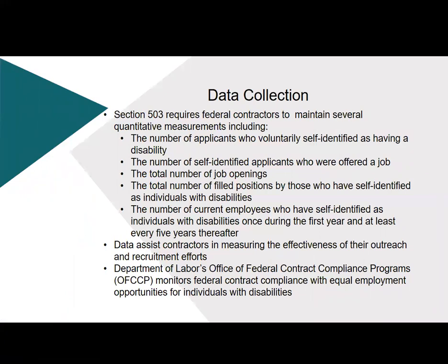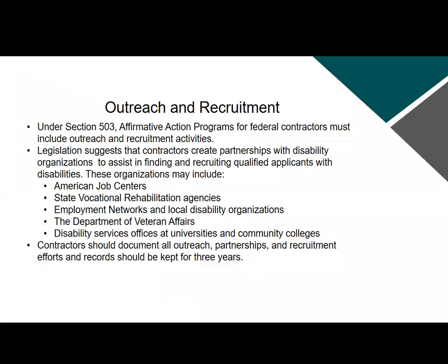The Department of Labor's Office of Federal Contract Compliance Programs monitors Section 503 compliance. Affirmative action programs for federal contractors must include outreach and recruitment activities. The legislation suggests that contractors create partnerships with disability organizations to assist in finding and recruiting qualified applicants with disabilities. These organizations may include American Job Centers, State Vocational Rehabilitation Agencies, Employment Networks and Local Disability Organizations, the Department of Veterans Affairs, and Disability Services Offices at Universities and Community Colleges. Contractors should document all outreach, partnerships, and recruitment efforts, and records should be kept for at least three years.